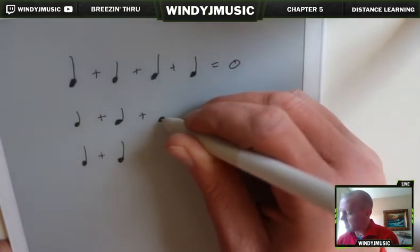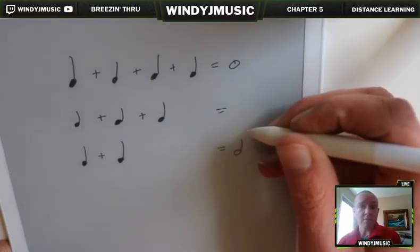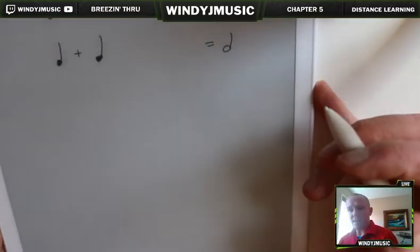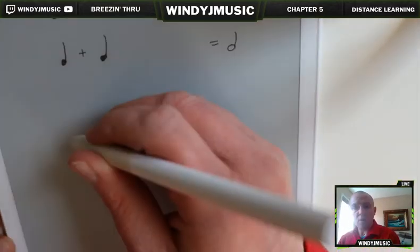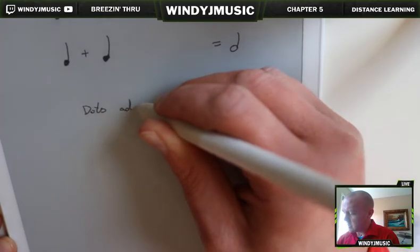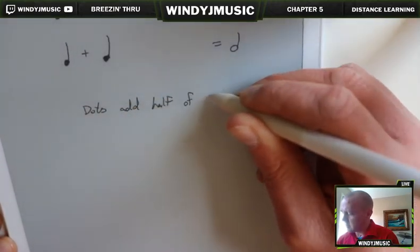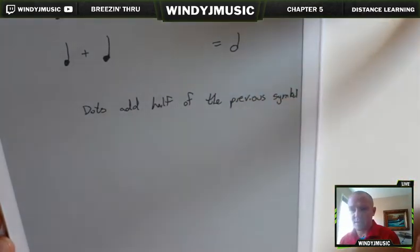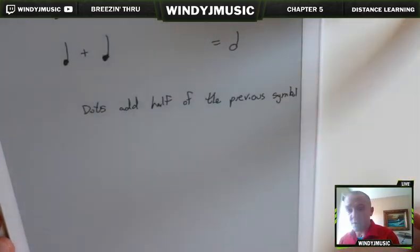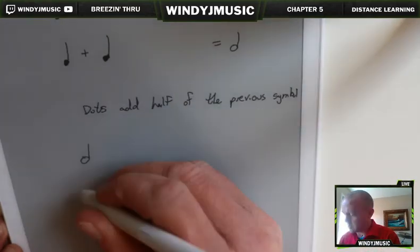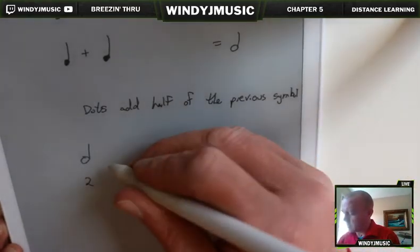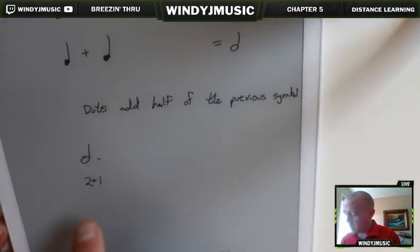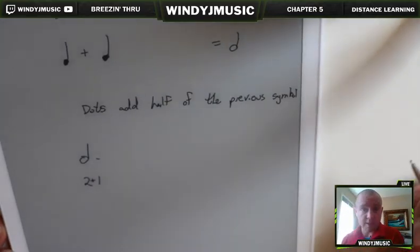What if you want something in between — three beats of length instead? That's when we get to start using dotted rhythms, and that's what chapter five is mostly about. The rule for dots is that a dot always adds half of the previous symbol. So if you have a half note, that's two beats worth, and if you add a dot on it, that adds one beat — because one is half of two.